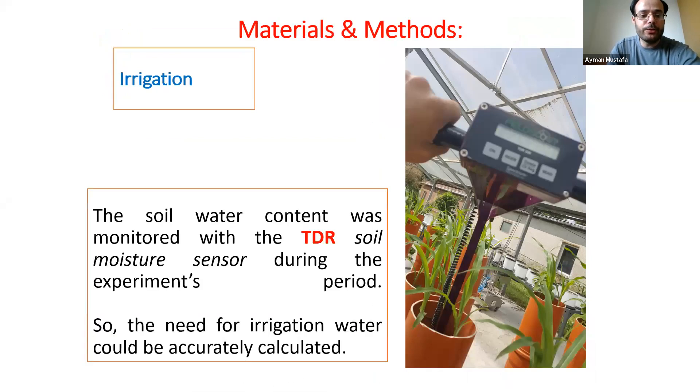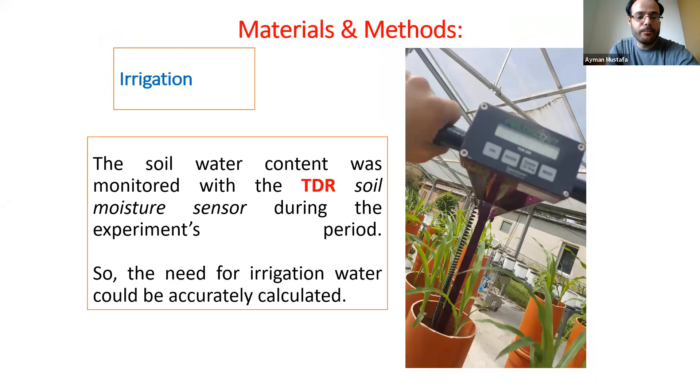In order to irrigate, we monitored the soil water content using the TDR-300. It's very accurate and we could calculate the irrigation water requirements very accurately.